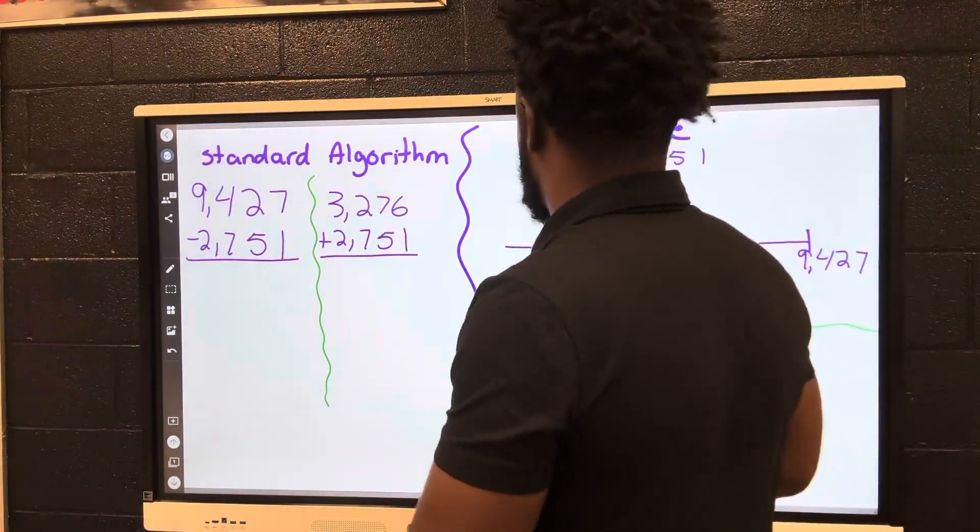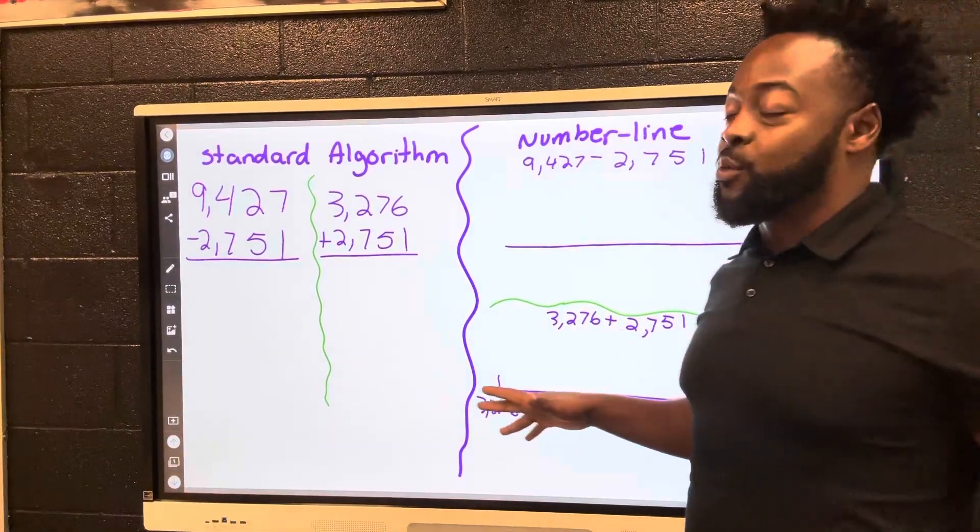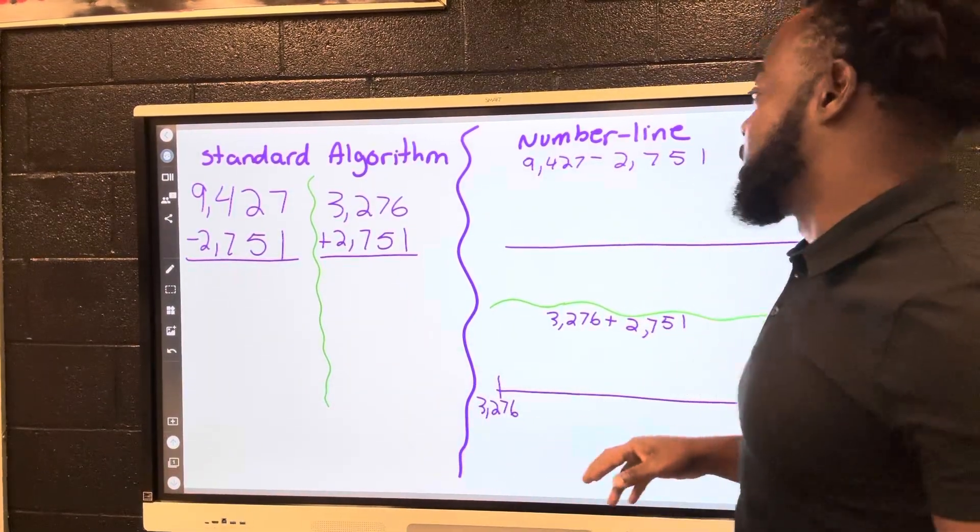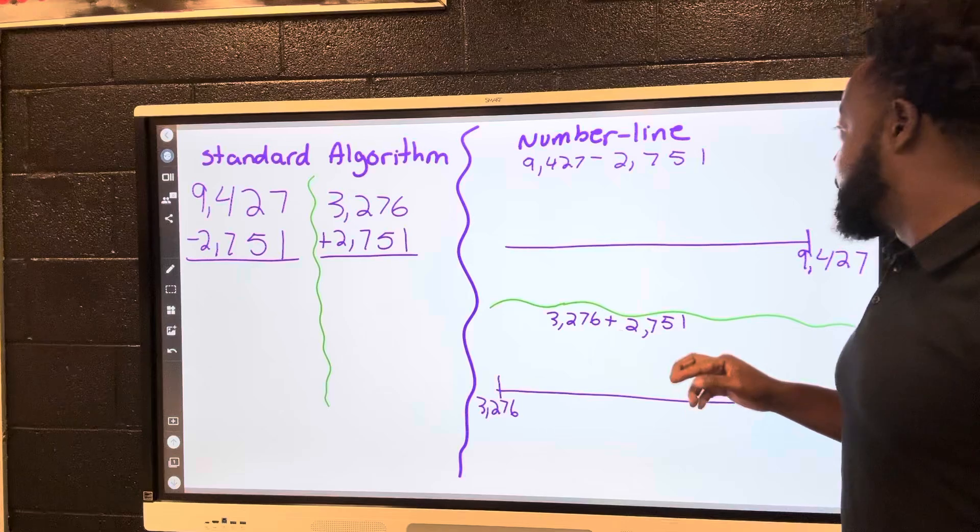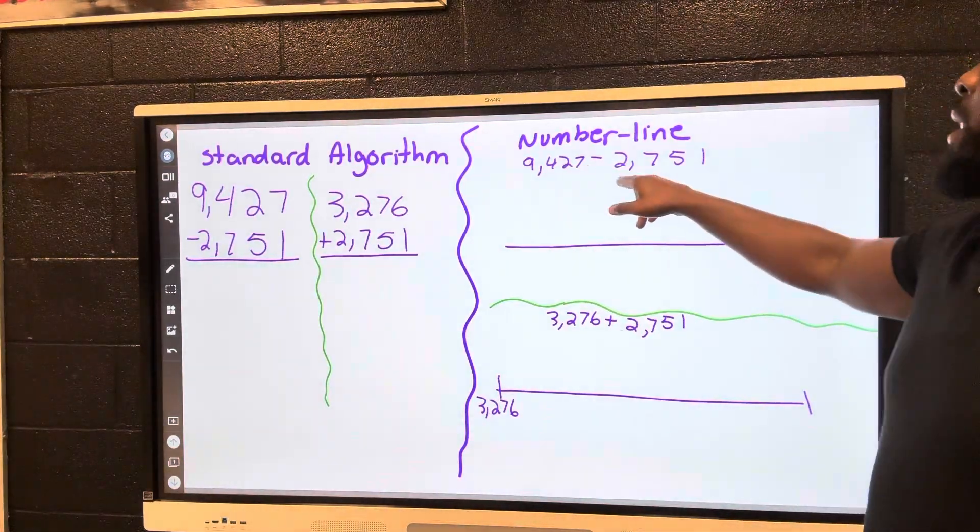Alright you guys, it's review, our warm up. I'm going to start first by doing the number lines. We're focusing on adding and subtracting on the number lines and using the standard algorithm. So first we'll do 9,427 minus 2,751.